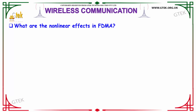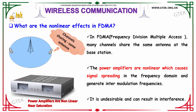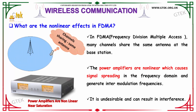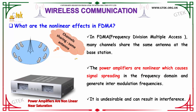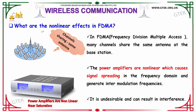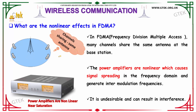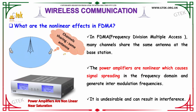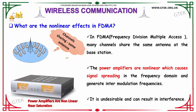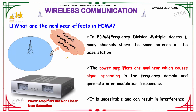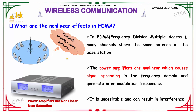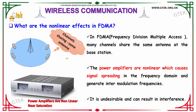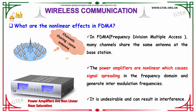What are the non-linear effects in FDMA? FDMA is nothing but Frequency Division Multiple Access. In FDMA, many channels share the same antenna at the base station. The power amplifiers are non-linear, which causes signal spreading in the frequency domain and also generates inter-modulation frequencies. This is undesirable and can result in interference.